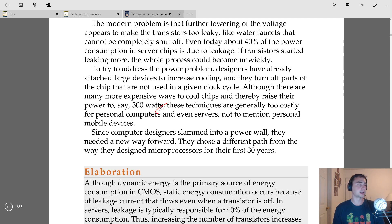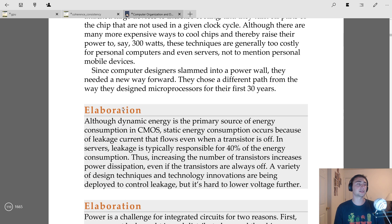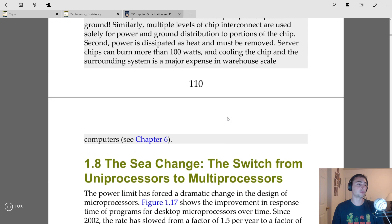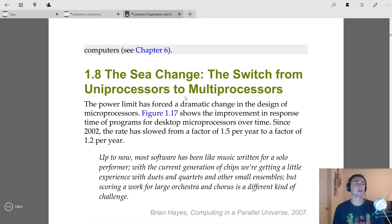There's a number of things that this has affected. Since computer designers slammed into the power wall, they've needed a new way forward. They chose a different path from the way they designed microprocessors for the first 30 years. In the next video, we'll go over section 1.8, 'The Sea of Change: The Switch from Uniprocessors to Multiprocessors.'